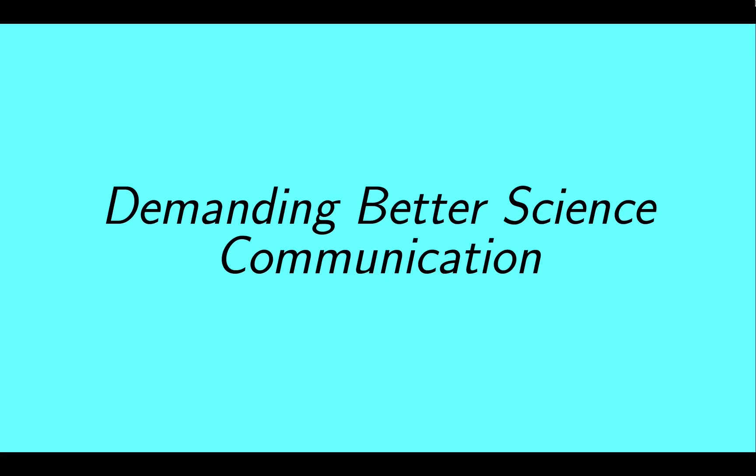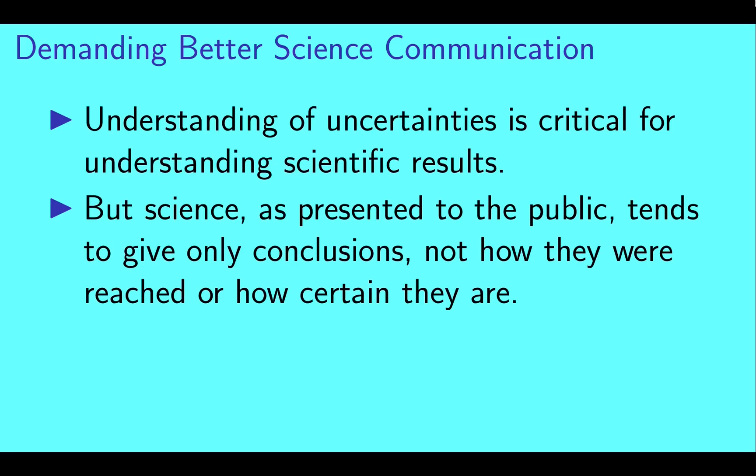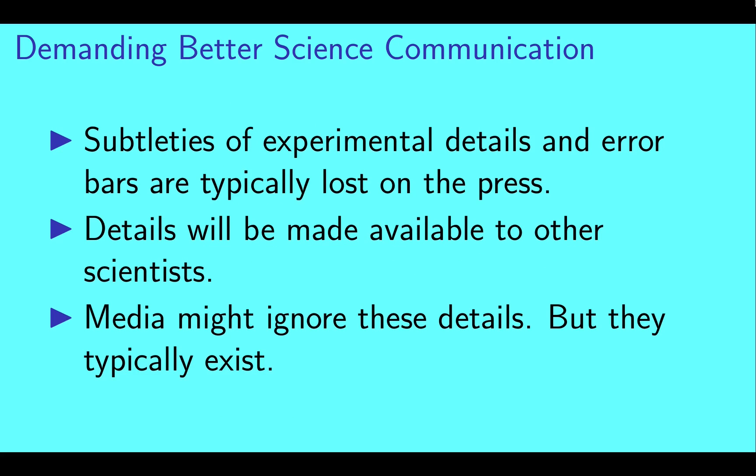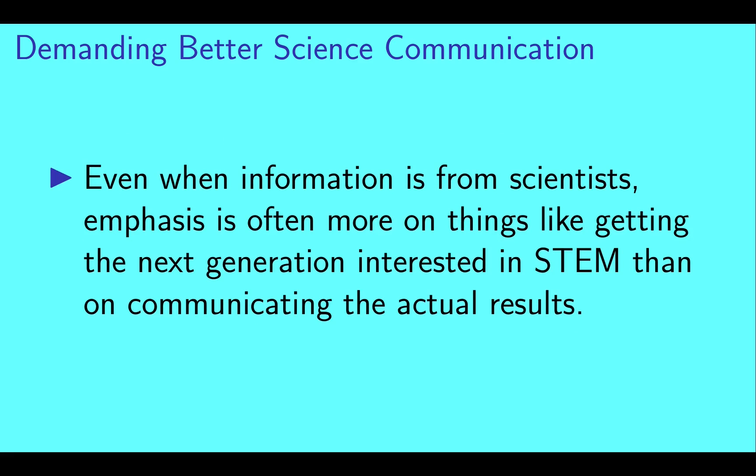Okay, next: demanding better science communication. Understanding of uncertainties is critical for interpreting scientific results, but science as presented to the public tends to give only conclusions and gloss over how they were reached or how certain they are. The subtleties of experimental details and error bars are unfortunately typically lost on the press. These details will be made available to other scientists, so while the media might ignore these details, they typically do exist.